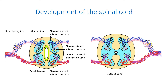The dorsal part is termed alar lamina; its cells become functionally afferent, or sensory. Pseudo-unipolar neurons – the axons of spinal ganglia – develop from the neural crest. The central processes penetrate the alar lamina and synapse with its neurons. The ventral part is called the basal lamina; its cells become efferent, or motor. The axons of basal lamina cells leave the developing spinal cord, forming ventral roots, and join with the peripheral processes of spinal ganglia neurons, forming the spinal nerves.